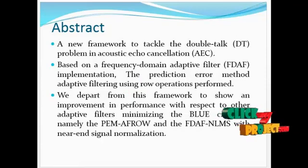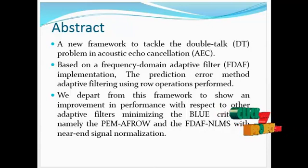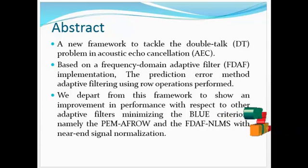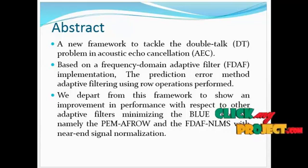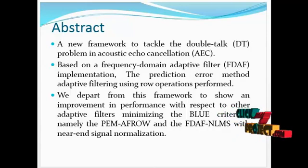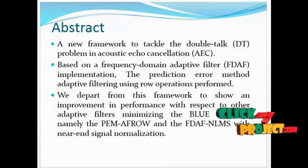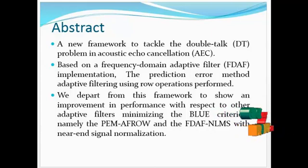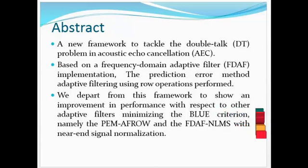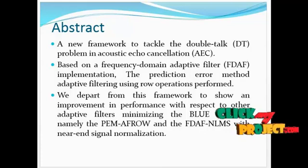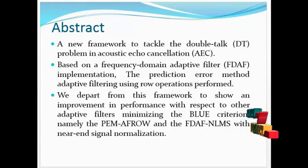In speech processing applications, the existence of echoes degrades speech integrity and listening comfort. For mobile hands-free telephony and teleconferencing — termed as Voice over Internet Protocol — a framework to tackle the double talk problem in acoustic echo cancellation is proposed using a frequency domain based approach. Adaptive filtering algorithms such as Normalized Least Mean Square, Least Mean Square, and Recursive Least Square are discussed as time domain approaches, whereas a frequency domain prediction error based method framework is proposed for optimization of correlated samples. The computational complexity and IPC measure values are validated in this paper.